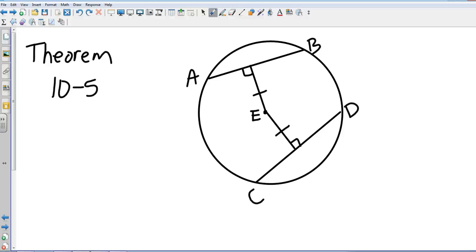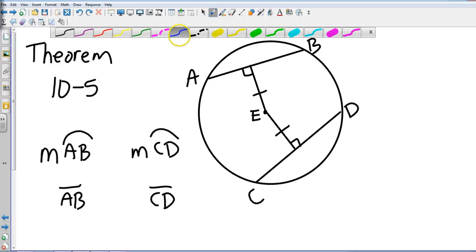Theorem 10-5. We're going to look at the relationship between the measure of arc AB and the measure of arc CD. Theorem 10-5 says if the chords—which are these lengths right here—if the chords are equidistant away from the center. You see that this chord shares that distance from the center, and they are both equal. So if those two chords are the same distance from the center, then they are congruent.